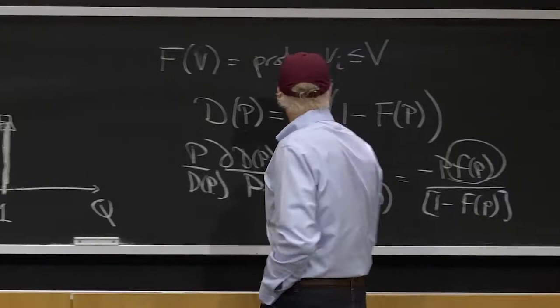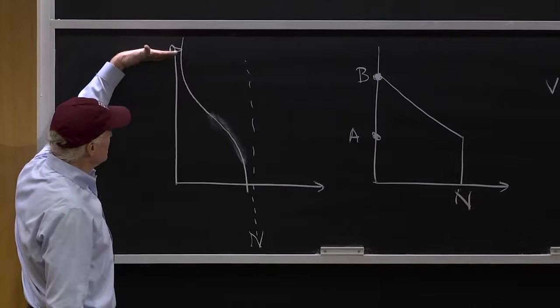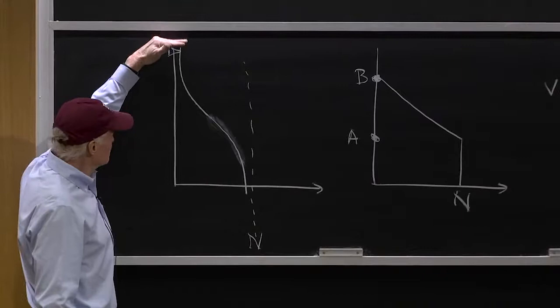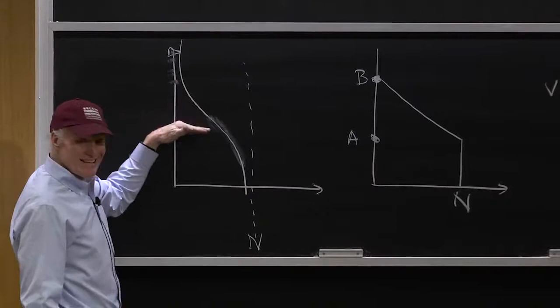And so if we had a demand curve that looks like this, what you'd see if you, for example, had a new good that came in with a really high price, hardly anybody would be buying. As prices came down maybe the number of people buying wouldn't go up very fast. But then when we get into the meat of the distribution here there would be a big increase in the number of consumers, right?